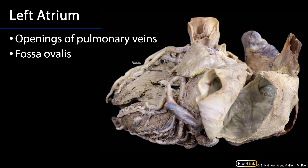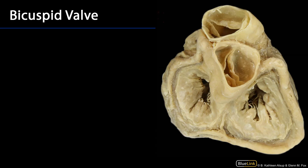Here's a better view with that reflected away, and we can see the fossa ovalis located there. Blood is going to flow through the left atrium through the bicuspid valve, which has anterior and posterior cusps — also called the mitral valve. This is what blood passes through between the left atrium and the left ventricle.